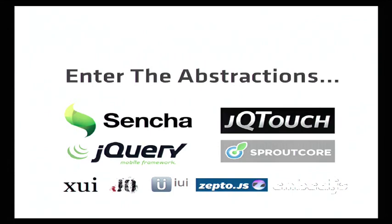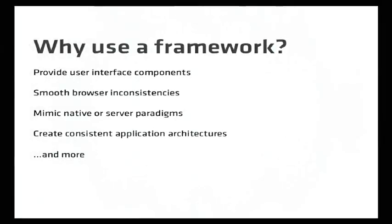And then Sprout Core — there will be something at some point that works on tablets. There's a bunch of smaller abstractions that aim to do less or solve a slightly smaller problem. So, why would you use a framework? Why use these abstractions? One is that it provides user interface components. We had to rewrite our Android scroller nine times to make it high performance and to work correctly with all the other components we were using.